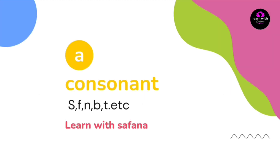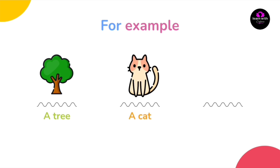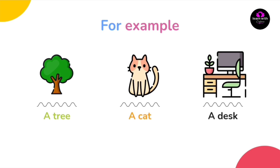الـ 'a' دائما نستعملها مع الـ consonants، اللي هي الحروف الساكنة — يعني جميع الحروف في اللغة الانجليزية ما عدا حروف العلة. على سبيل المثال: a tree، a cat، a desk.